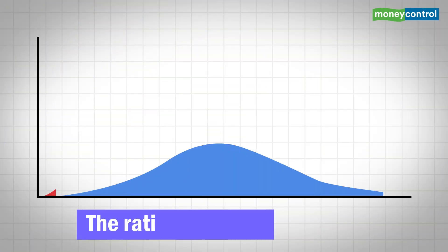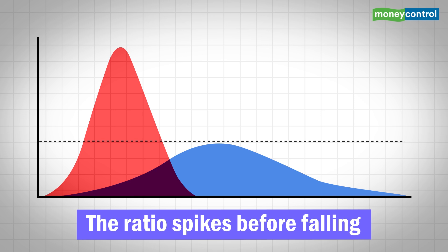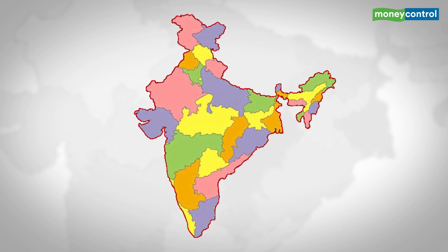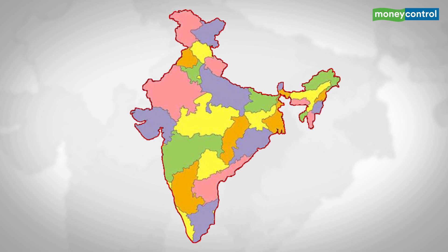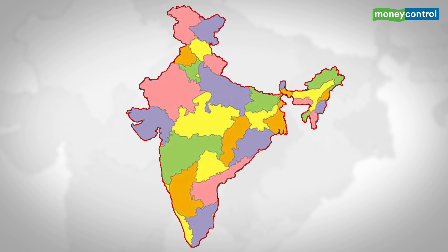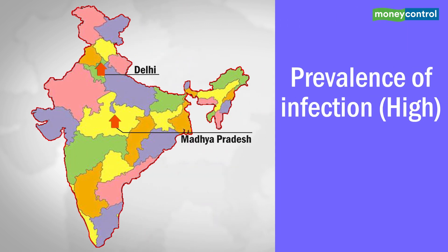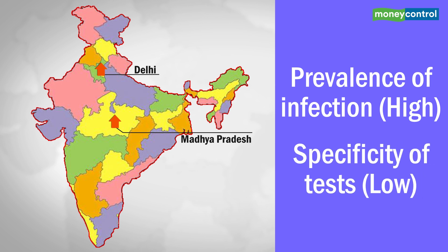Global trends show the COVID-19 curve peaks before flattening, meaning the ratio spikes before falling. In India, the positive case-to-test ratio differs across states. It is decreasing sharply in states like Kerala and Tamil Nadu, while increasing in Maharashtra and Gujarat. Other states, such as Madhya Pradesh and Delhi, have a high ratio, but it is receding. This means the prevalence of infection may not have declined, but is balancing against the decreased specificity of the tests being conducted.